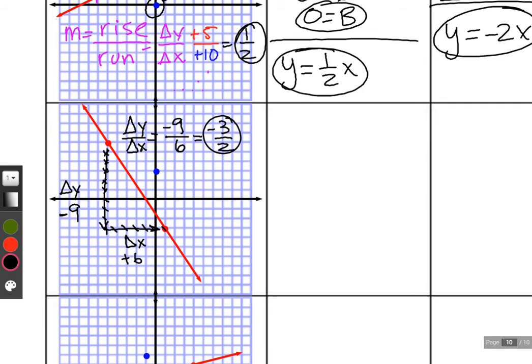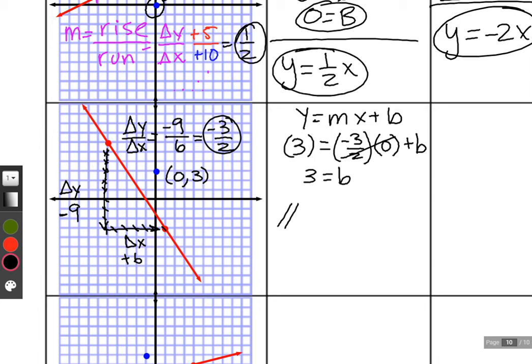Building up our equation, y equals mx plus b. We need a temporary x and y. This value looks like it's zero comma three. We borrow the three, the slope of negative three over two, and the x of zero plus b. Anything times zero is zero, which means our b value is just three. So our parallel equation is y equals negative three over two x plus three. We could have predicted that because the point we were given is precisely the y-intercept. It's crossing the y-axis at three.